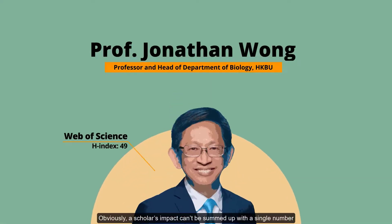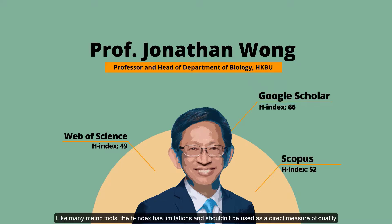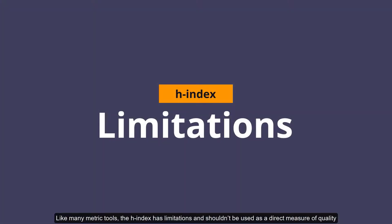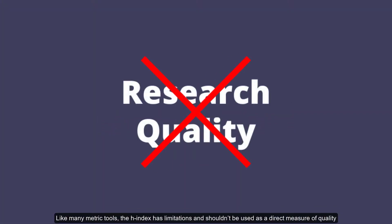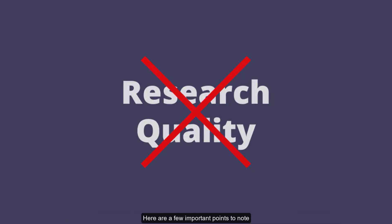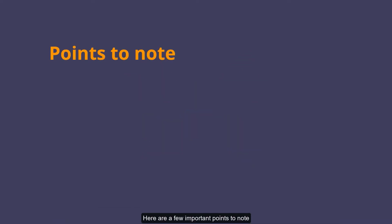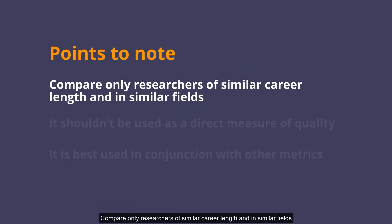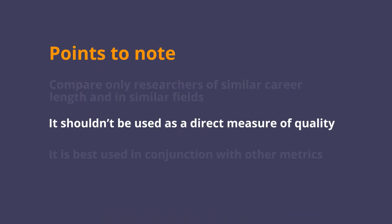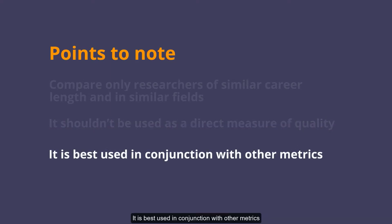Obviously, a scholar's impact can't be summed up with a single number. Like many metric tools, the H-index has limitations and shouldn't be used as a direct measure of quality. Here are a few important points to note: compare only researchers of similar career length and in similar fields; it shouldn't be used as a direct measure of quality; and it is best used in conjunction with other metrics.